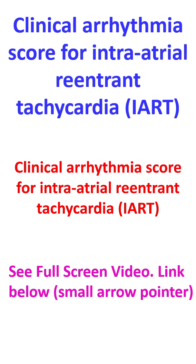A clinical arrhythmia score was developed for assessing the severity of intra-atrial reentrant tachycardia, IART. Four parameters were considered for scoring: documented IART, frequency of cardioversion in the preceding three months, severity of IART, and anti-arrhythmic medications. Each category was scored from 0 to 3, so that the maximum total sum of scores would be 12.